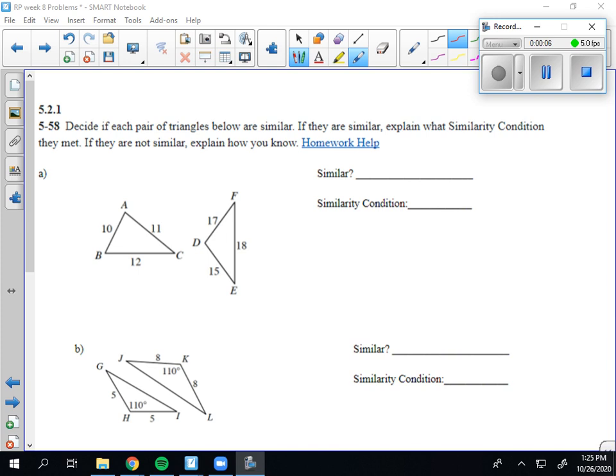So this is problem 558. Decide if each pair of triangles below are similar. If they are similar, explain what similarity condition they met. If they are not similar, explain how you know.